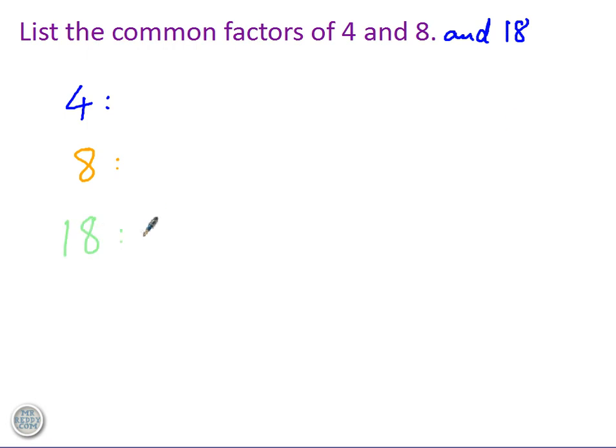And then look for the ones that they have in common. And it turns out, once you've done that, that the common factors are 1 and 2, because these are the only factors that go into 4, 8 and 18. Okay? Common factors of 4, 8 and 18 are 1 and 2.